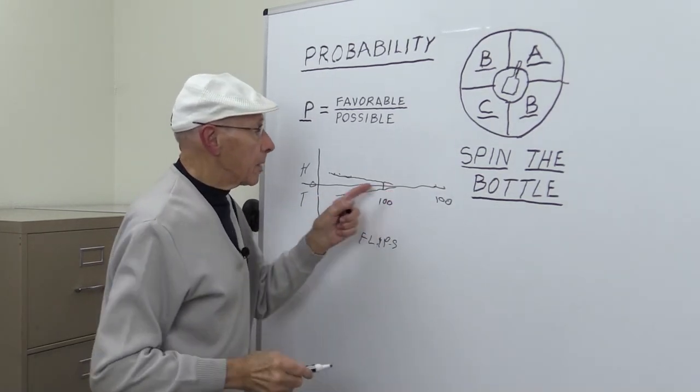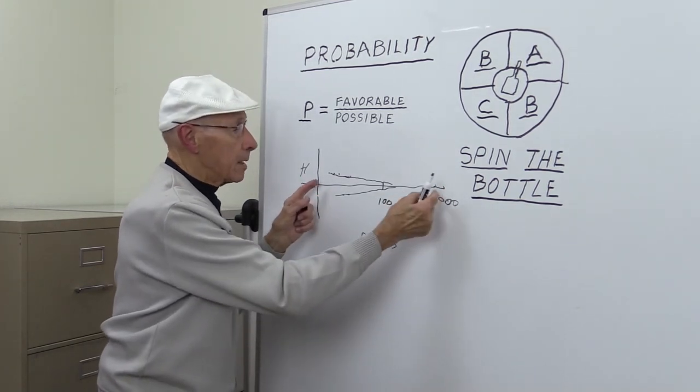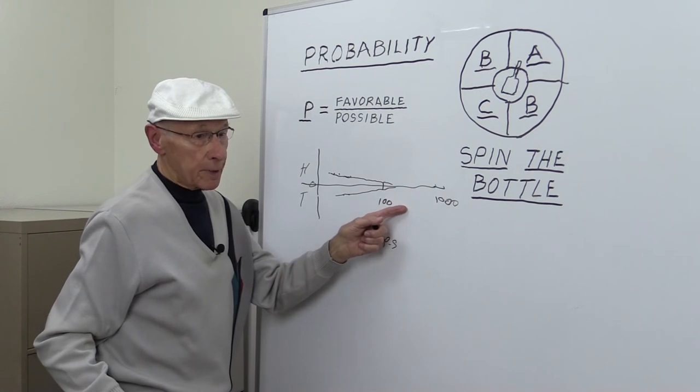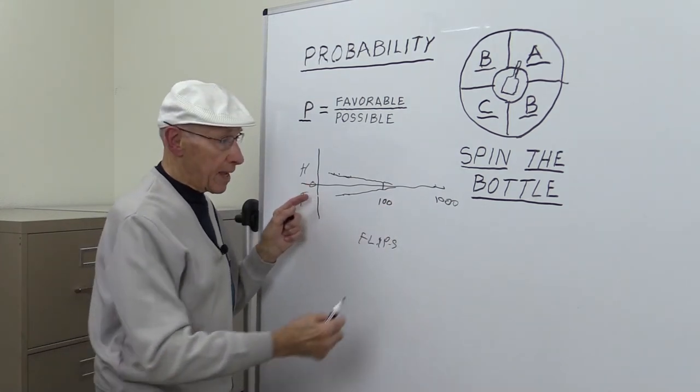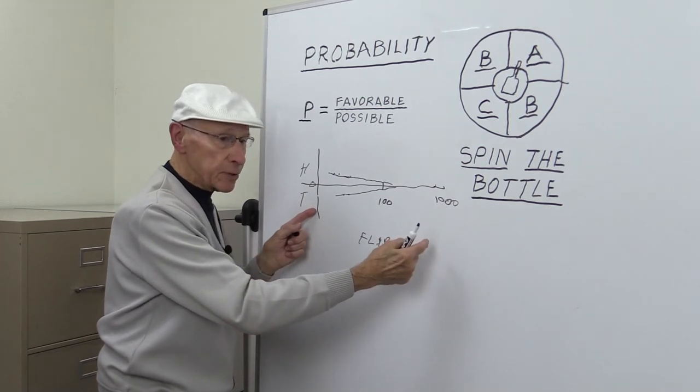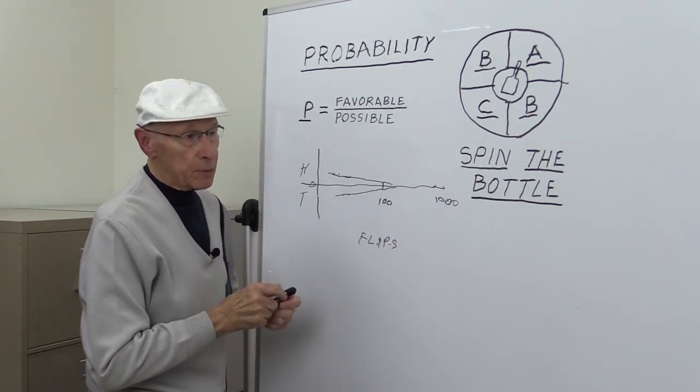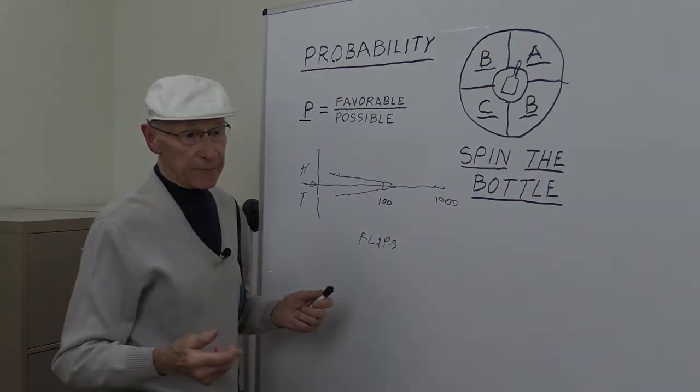Since no matter what, over this period, over 1,000 flips, it'll either be heads or tails. But you have to do it over a large number of times. That is the simplest form that everybody knows. Flip a coin. We'll do this if it's heads or we'll do that if it's tails.